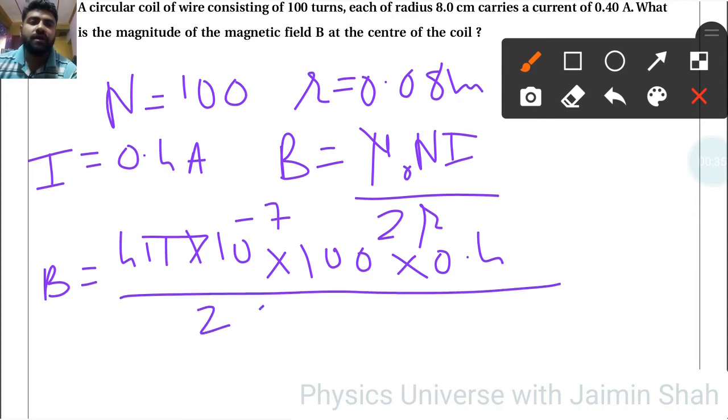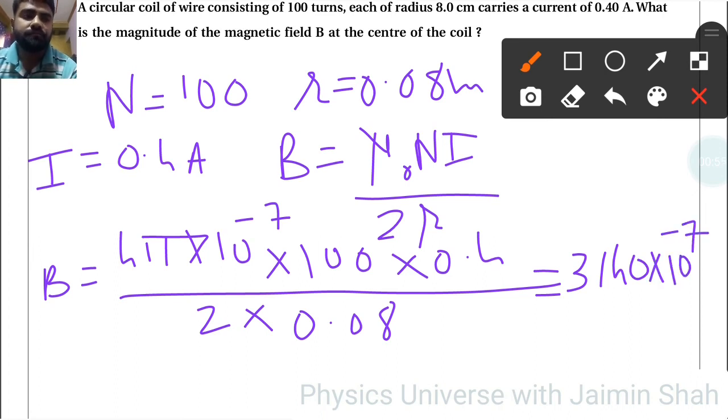So 4 times 3.14 times 100 times 0.4 upon 2 upon 0.08. That is 3140 times 10 to the minus 7 in Tesla. That is the magnetic field at the center of the coil.